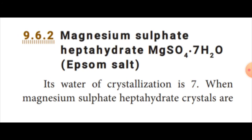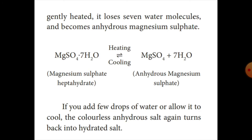This is one of the properties of copper sulfate pentahydrate. Magnesium sulfate heptahydrate — 'hepta' means 7 — is also known as Epsom salt. Its water of crystallization is 7. When gently heated, it loses 7 water molecules and becomes anhydrous magnesium sulfate. Adding a few drops of water turns it back to the hydrated salt.